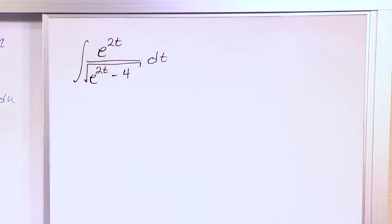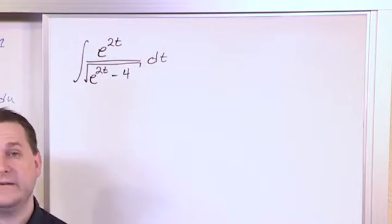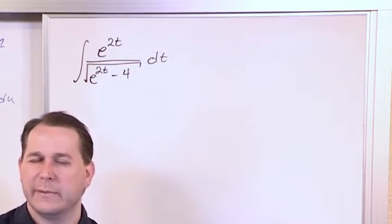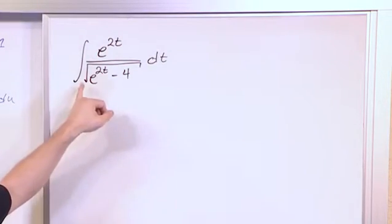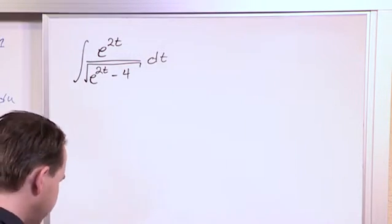So here we have the same problem. We have, not only do we have exponentials, but it's not e to the t, it's e to the 2t. Now that's ugly by itself. And then we also have the bottom wrapped up in a giant radical, so that makes it even uglier.